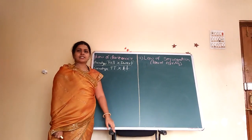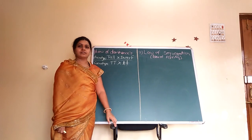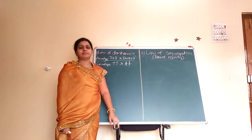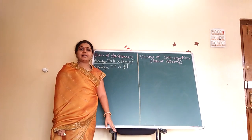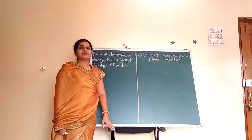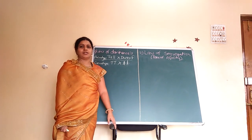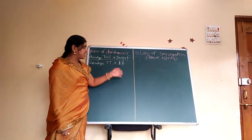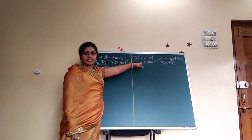Hello students. We started the third chapter, that is Inheritance and Variation, and in that we saw the various types of genetic terms and what inheritance means. Today we see the Mendelian laws, or the various types of laws of inheritance. The first Mendelian law is the law of dominance. Today we see two laws: the law of dominance and the law of segregation.